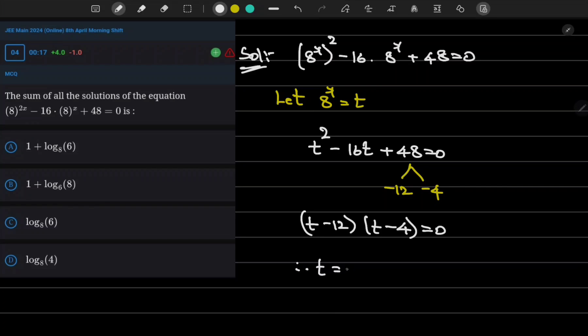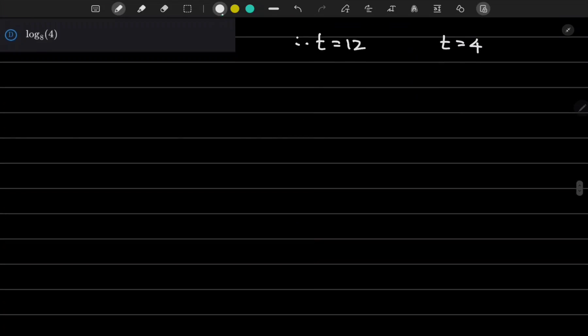Therefore t value can be 12 or t value can be 4, where t is 8^x. So 8^x = 12 or 8^x = 4.